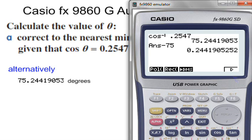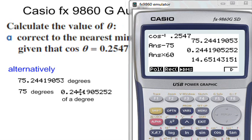So a degree is 60 minutes. So therefore it's 0.244 times by 60. So I get 14.65. So that is my amount of minutes.